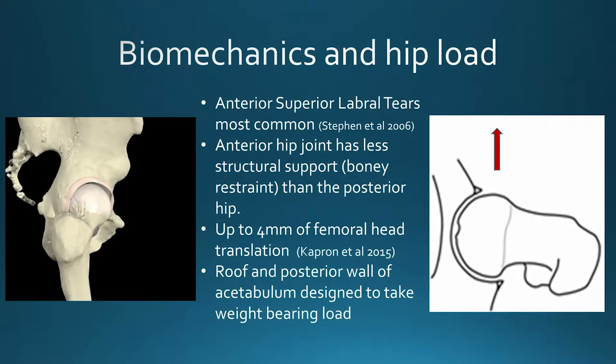Before covering contributing factors to anterior hip pain and overload, I'd like to do a quick review of hip biomechanics and anatomy. Anterior superior labral tears are by far the most common tear we see, and the anterior superior margin of the hip joint is more vulnerable. Looking at the bird's eye view of the acetabulum, the posterior part offers a lot of bony restraint for the femoral head, whereas the anterior part has less bony restraint because the acetabulum tends to face forward — though this varies from patient to patient. Any subtle instability tends to be in the anterior direction, and there can be up to four millimetres of femoral head translation within the acetabulum in the normal population.